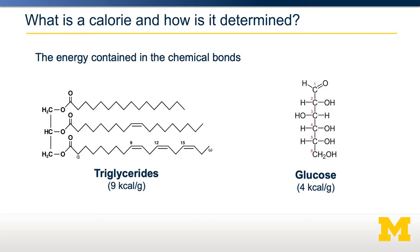Let's return back to a calorie. Remember, energy intake is determined as the amount of energy that is available from the food that we eat. This energy is contained within the chemical bonds of food. For example, triglycerides have 9 kilocalories per gram, whereas carbohydrates, like glucose, have about 4 kilocalories per gram. If we want to match somebody's energy intake to their energy expenditure and give them advice about how much energy to consume, we need to know how much energy expenditure they're going to have.